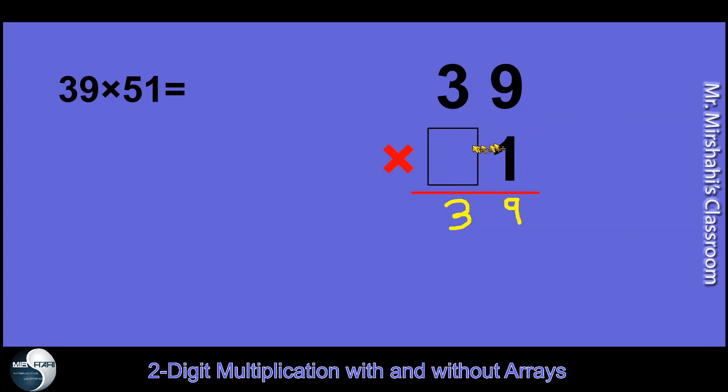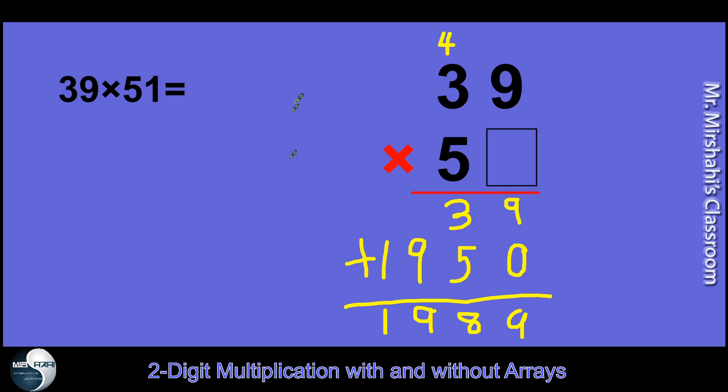Now I'm going to ignore 1 and multiply 5. But this is not 5, it's 50. So remember to put the 0. 5 times 9 is 45. So 5, and that's 4. 5 times 3 is 15, and 4 is 19. Now you're going to add these two numbers up. Add them up, and you get 9. 3 and 5 is 8, I get 9 here and 1 there. 1,989.